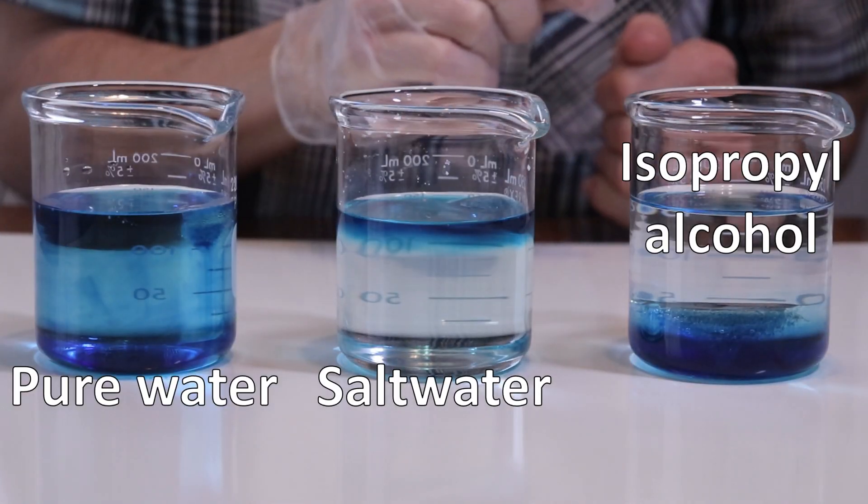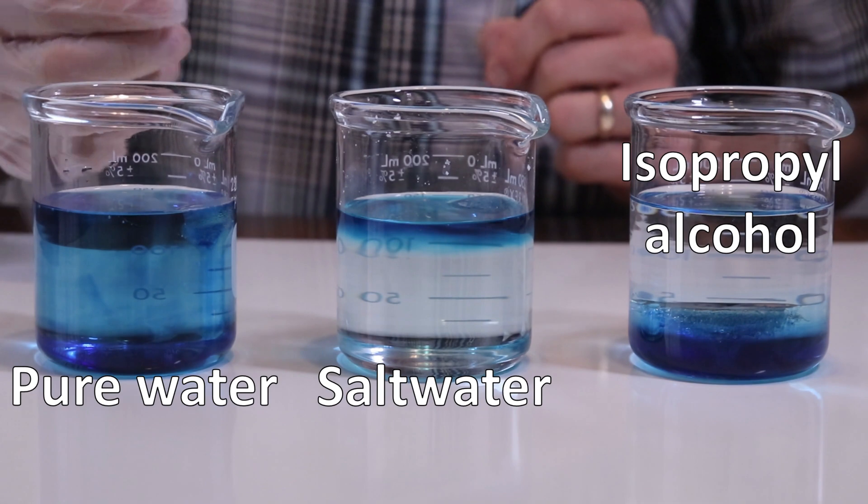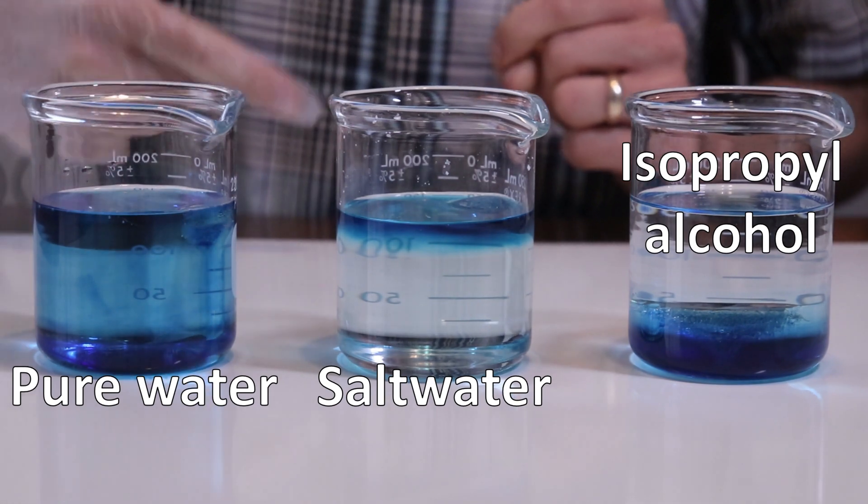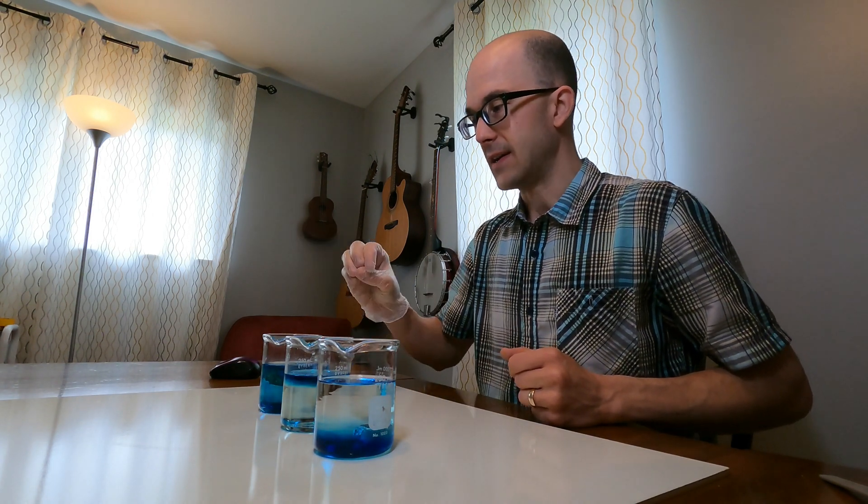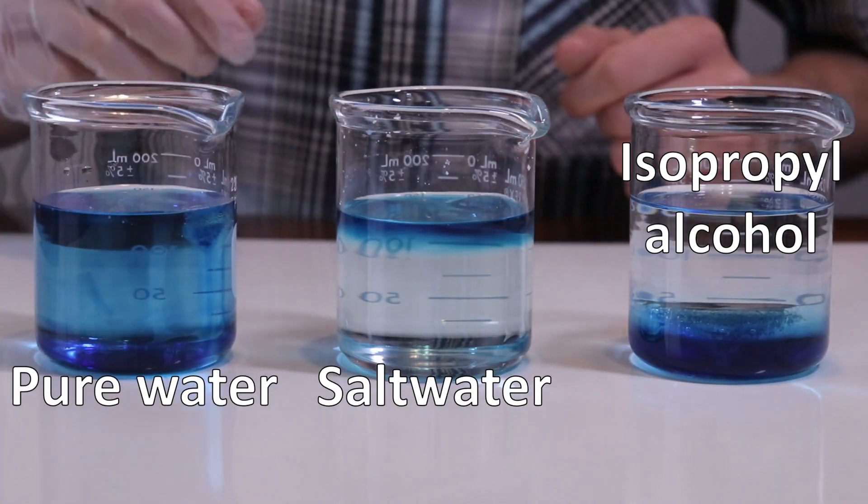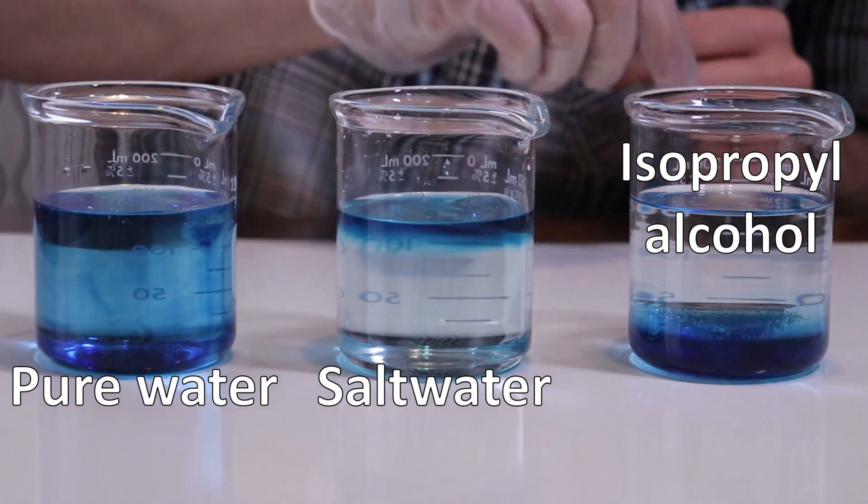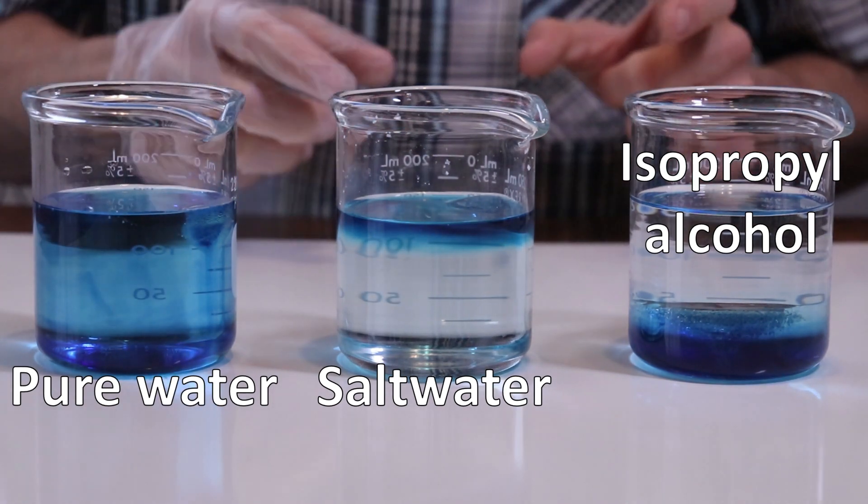Well, that's interesting. The melting ice acted totally different in all three liquids. In the pure water, it looks like the melt water from the ice mixed completely with the rest of the liquid. It also melted a lot faster. The ice in the fresh water is almost completely melted.